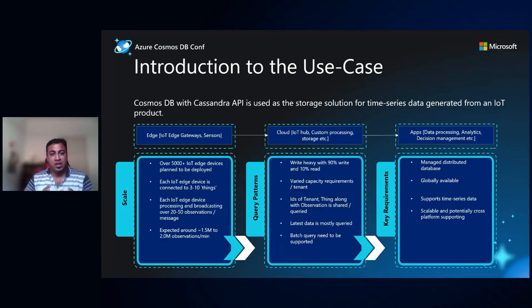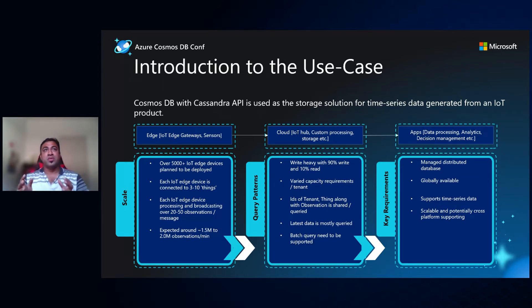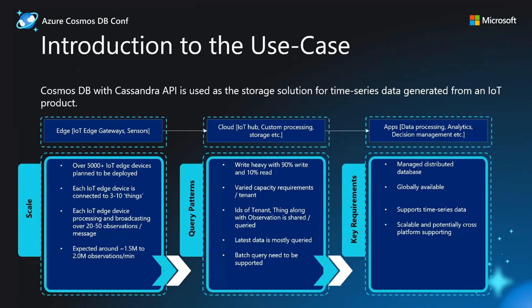Now we'll talk about the scale, the query patterns, and the key requirements we had for this product. From a scale perspective, we had over 5,000 IoT edge devices being deployed across the globe. Each of these edge devices were further connected to around 32 sensors. And each IoT device would transmit data — overall scale was expected to be around 2 million observations per minute at peak performance. That was the scale we were looking at.